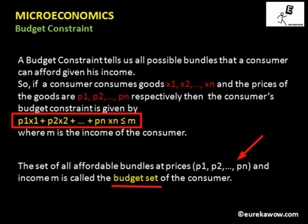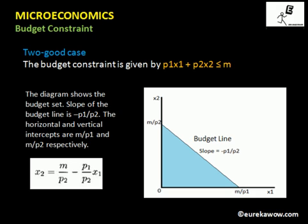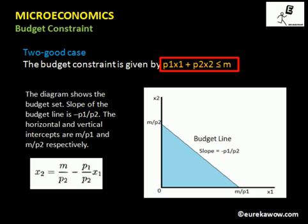Now we will look at the graphical representation of the budget constraint and the budget set. The budget constraint equation p1·x1 + p2·x2 + ... + pn·xn ≤ m simplifies to p1·x1 + p2·x2 ≤ m in the two-good case. The diagram shows the budget set — the line is the budget line and the inside region is the budget set.